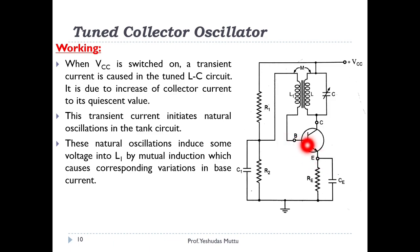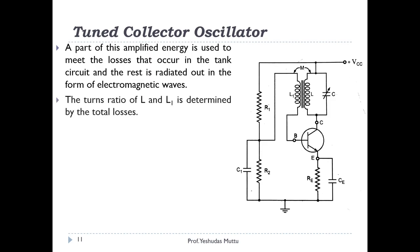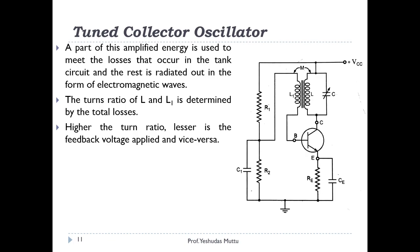The waveform appearing at the base gets amplified and appears at the collector output, compensating for losses that occur during energy transfer between L and C. The turns ratio — defined as L/L1 (primary to secondary) — determines the total losses. Higher turns ratio means lesser feedback voltage.